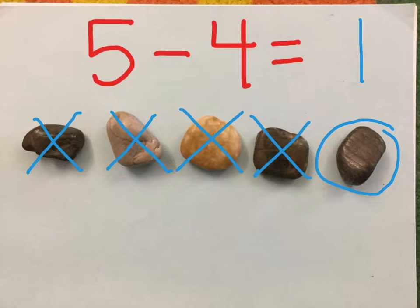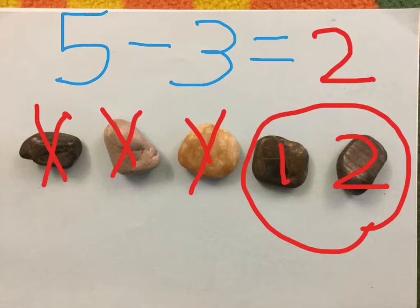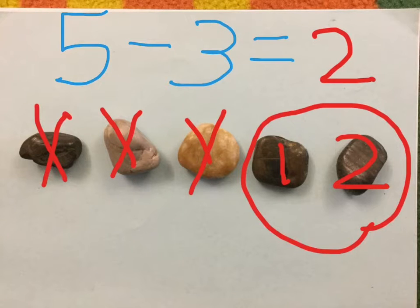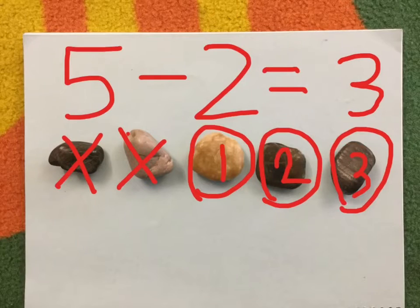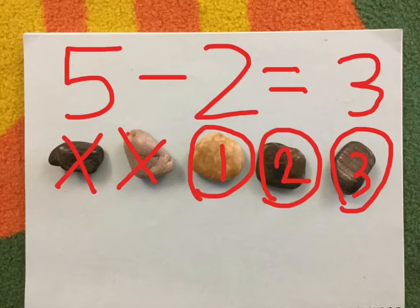Five minus four equals one. Next slide. Five minus three equals two. Next slide. Five minus two equals three.